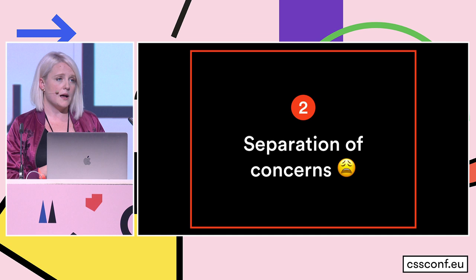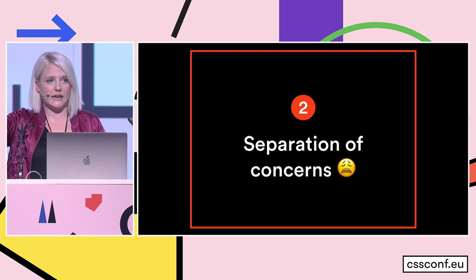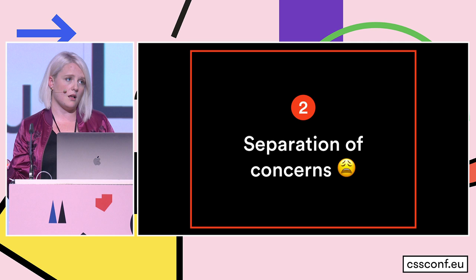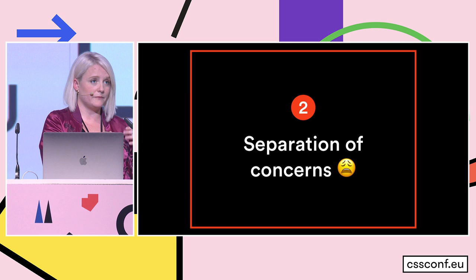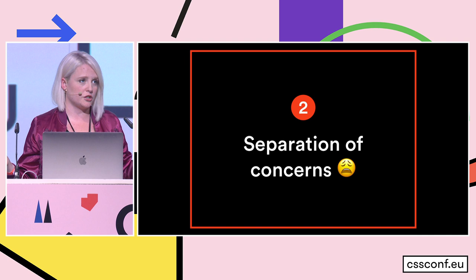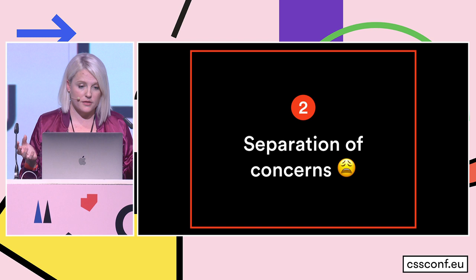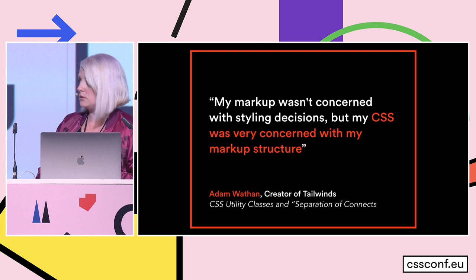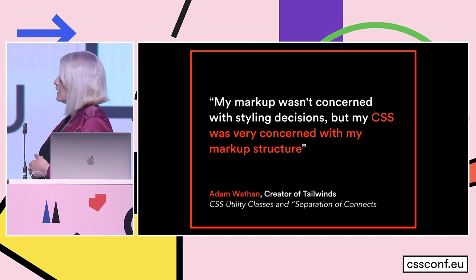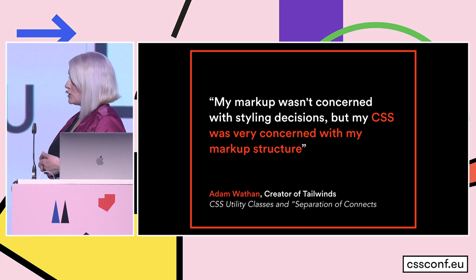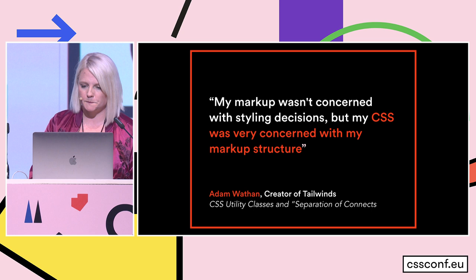There's a dependency direction thing that happens — either your markup is depending on your styles or your CSS styles are depending on your markup. When you have semantic class names like 'container' with a bunch of styles, that's tied to the structure in the HTML, versus having HTML with class names like 'flex' where you're tying things to the design. So it's a dependency direction choice. You don't really ever have a true separation of concerns and it's kind of a myth. There's a great article by Adam Wathan, one of the creators of Tailwind, that debunks this really well. My markup wasn't concerned with my styling decisions, but my CSS was very concerned with my markup structure.